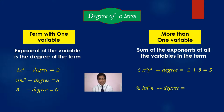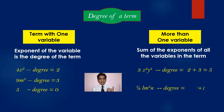Have a look at 1/2 lm²n — there are three variables: l, m, and n. The exponent of l is 1, the exponent of m is 2, and the exponent of n is 1. So the degree is 1 plus 2 plus 1, which is 4.